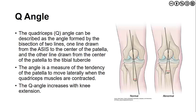When we consider Q angle, one of the things to note is how we actually make that measurement. It is formed from a line drawn from the ASIS to the center of the patella and then down to the center of the tibial tubercle. The angle measures the tendency of the patella to move laterally, and we would expect the Q angle to increase with knee extension, not knee flexion.